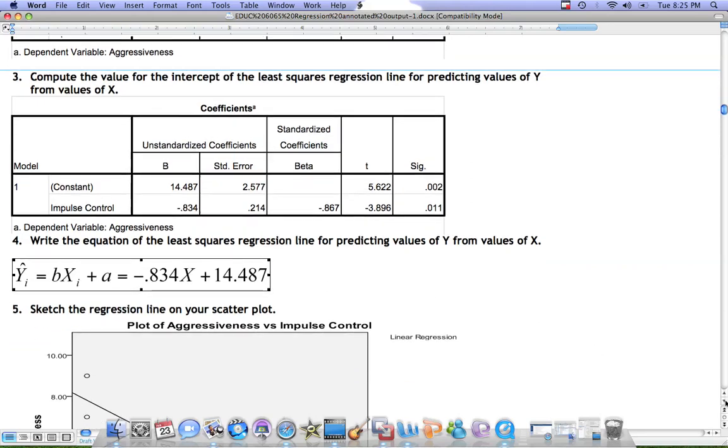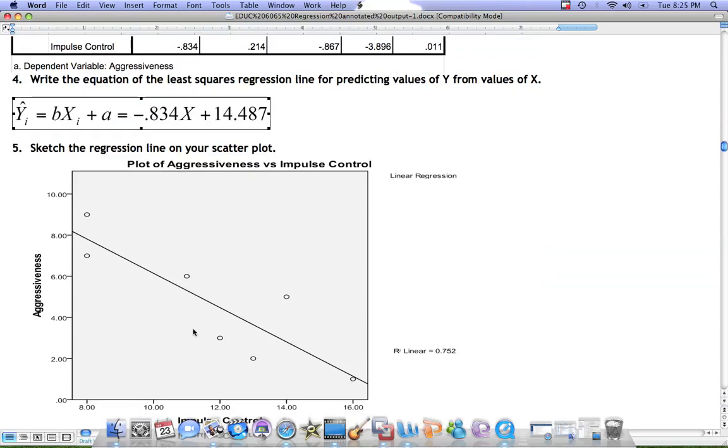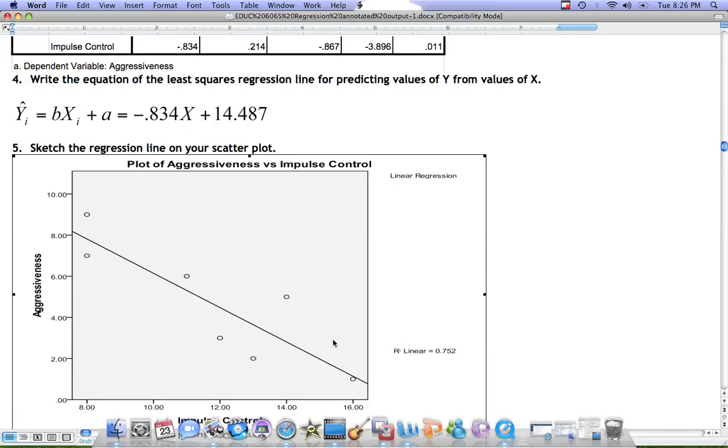Next, we want to sketch the line on our plot. We have two options for doing so. One option is to use the function in SPSS that sketches the line right on the graph. The second option is to plot the points on our own.